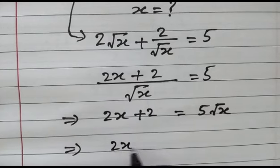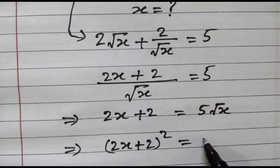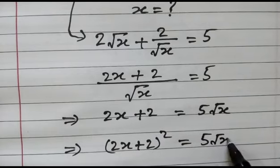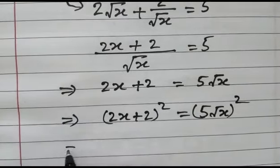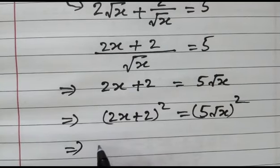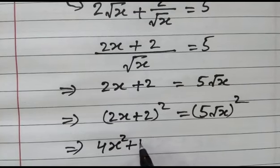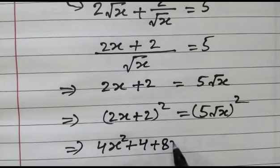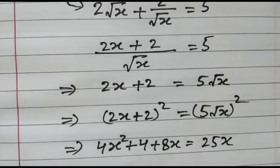Again, 2x plus 2, we square both sides. We get 4x square plus 4 plus 8x is equal to 25x.